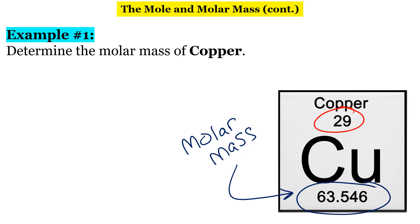So, that means if we had 6.02 times 10 to the 23rd atoms of copper, its mass would be 63.546 grams. So, the answer here is just going to be 63.546 grams per mole.